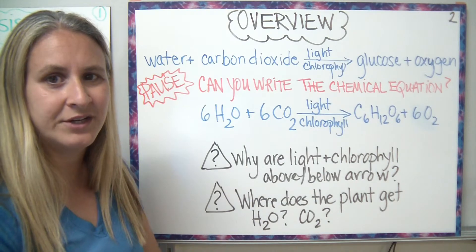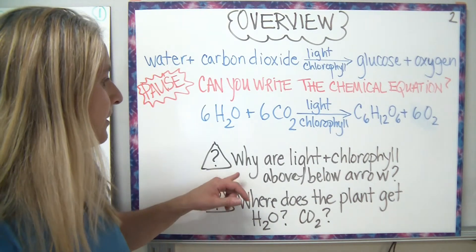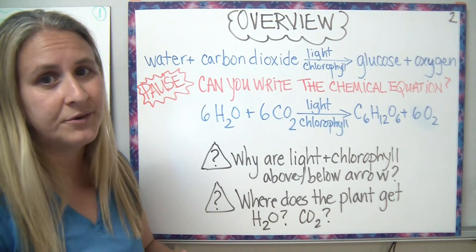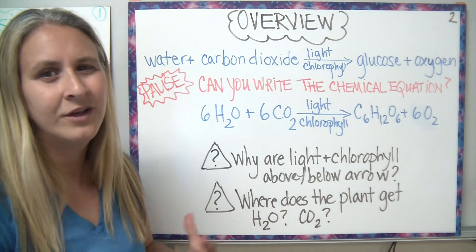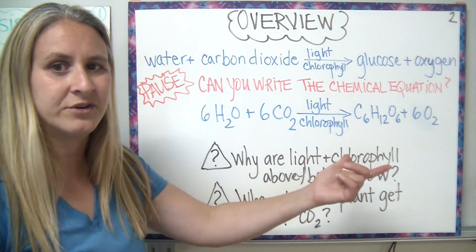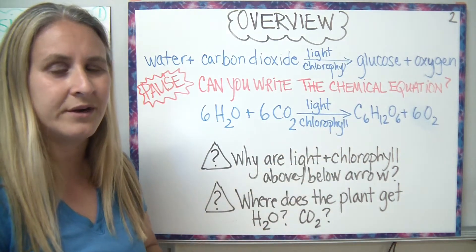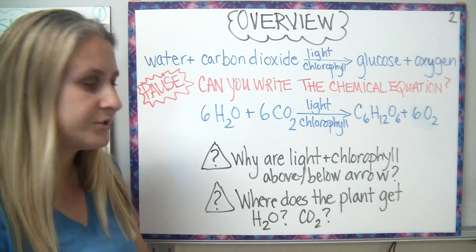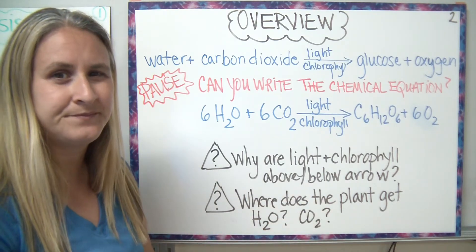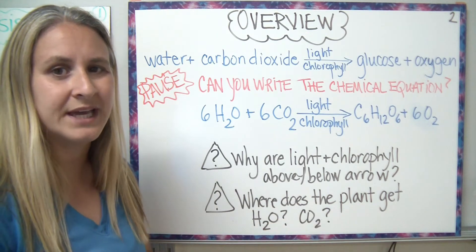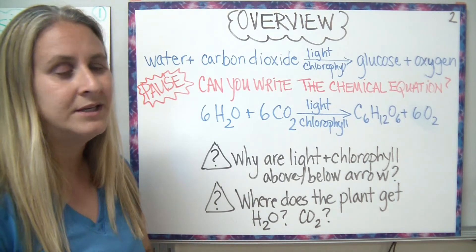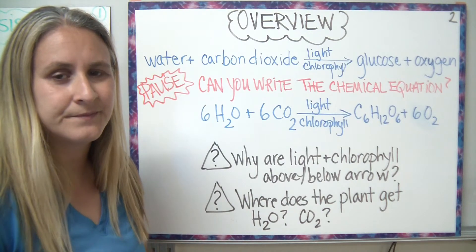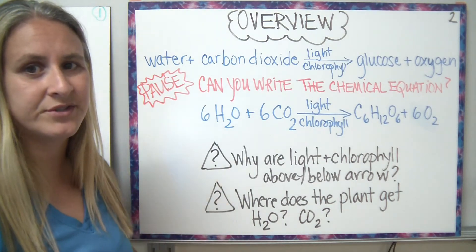There are two discussion questions I'd like you to think about. Why are light and chlorophyll written above and below the arrow — why not at the beginning or end of the reaction? We've discussed this in the past. The other question is: where does the plant get the water from? How does it get the water, and how does it go through the plant? And where does it get the carbon dioxide from? Pause and try to write your answers down — we'll discuss them tomorrow.